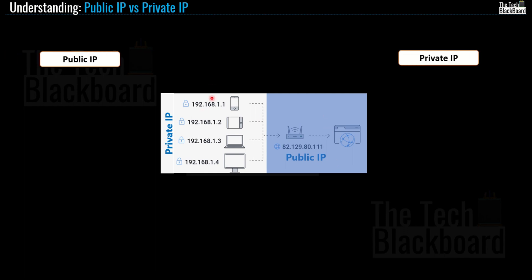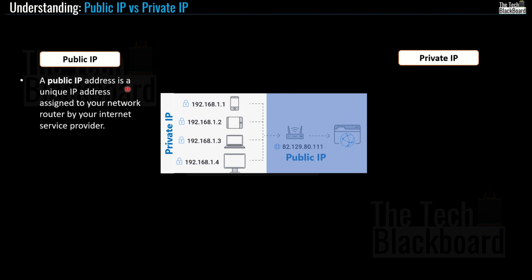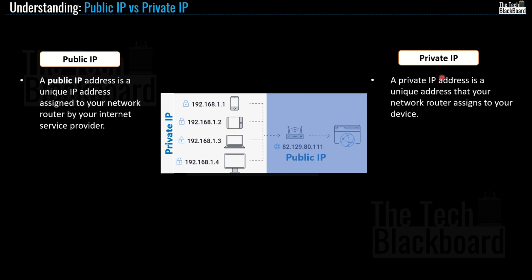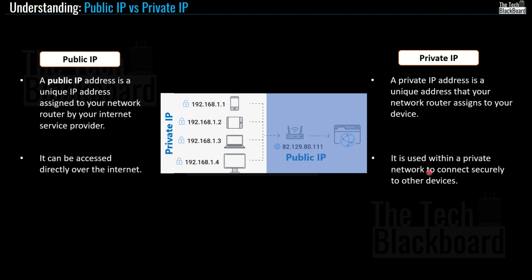The public IP address is a unique IP address assigned to your network router by your internet service provider. The private IP address is a unique address that your network router assigns to your device. Public IPs are directly accessible over the internet, while private IPs are used within the private network to connect securely to other devices. Importantly, public IPs are paid in Microsoft Azure, while private IPs are absolutely free.